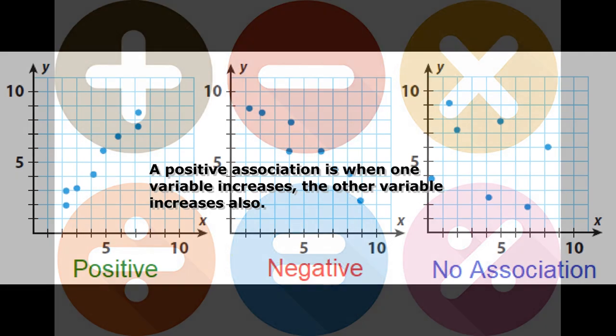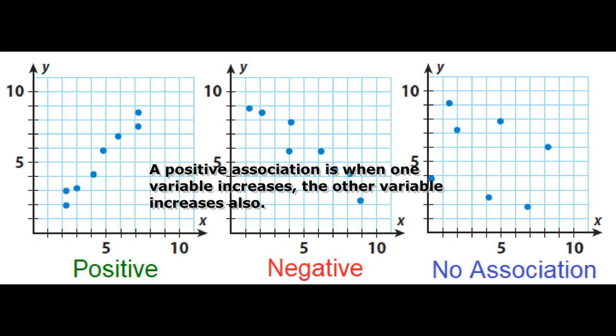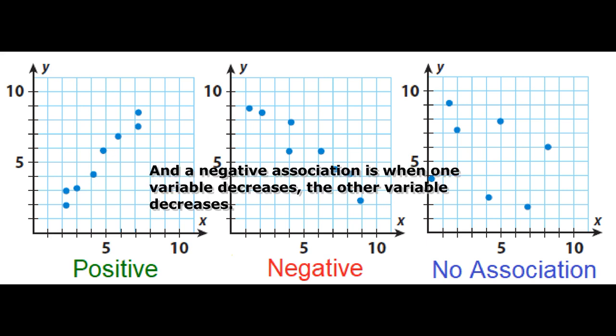A positive association is when one variable increases, the other variable increases also. And a negative association is when one variable decreases, the other variable decreases.